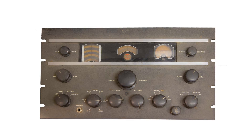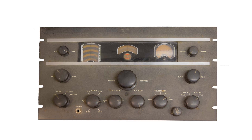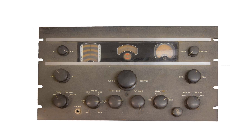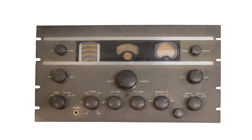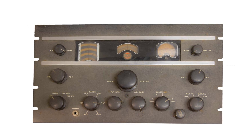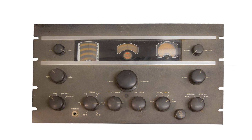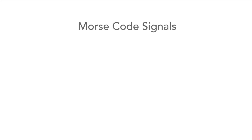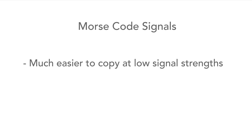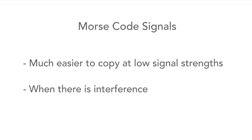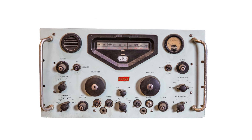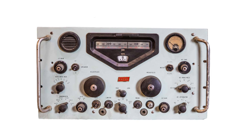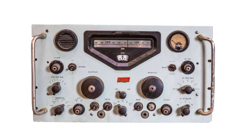Then, when radio was invented, Morse code was ideal for sending messages over the air. It was much simpler to turn a transmission on and off than to modulate it with a sound. Also, Morse code signals could be copied at much lower signal strengths or when there was more interference around, which was one of the reasons Morse code was used for carrying all sorts of radio messages.